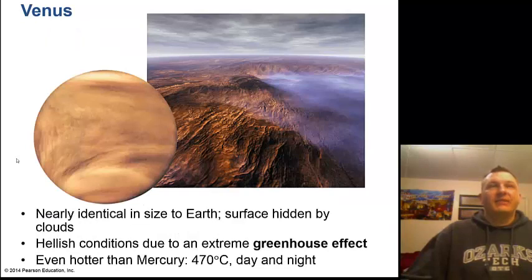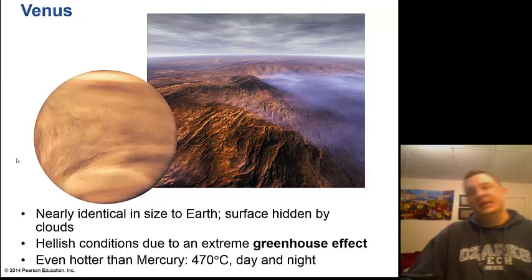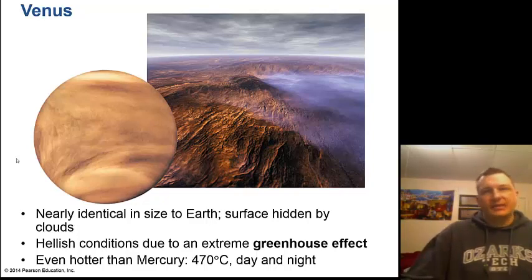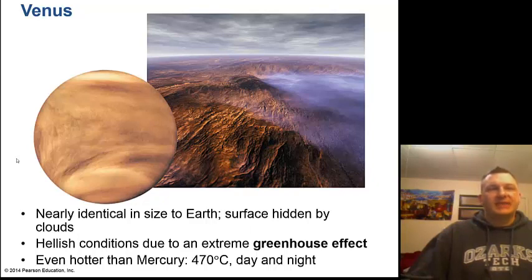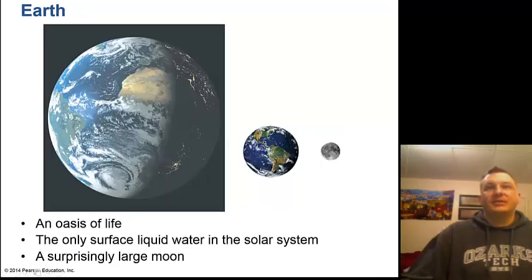Next up is cloudy Venus, nearly identical in size to Earth. Sometimes called Earth's sister planet, it actually has extreme hellish conditions due to a runaway greenhouse effect — it's even hotter than Mercury at 470 degrees day and night, because clouds trap carbon dioxide in the atmosphere. Then there's Earth, our oasis of life: the only planet with surface liquid water in the solar system, and a surprisingly large moon.